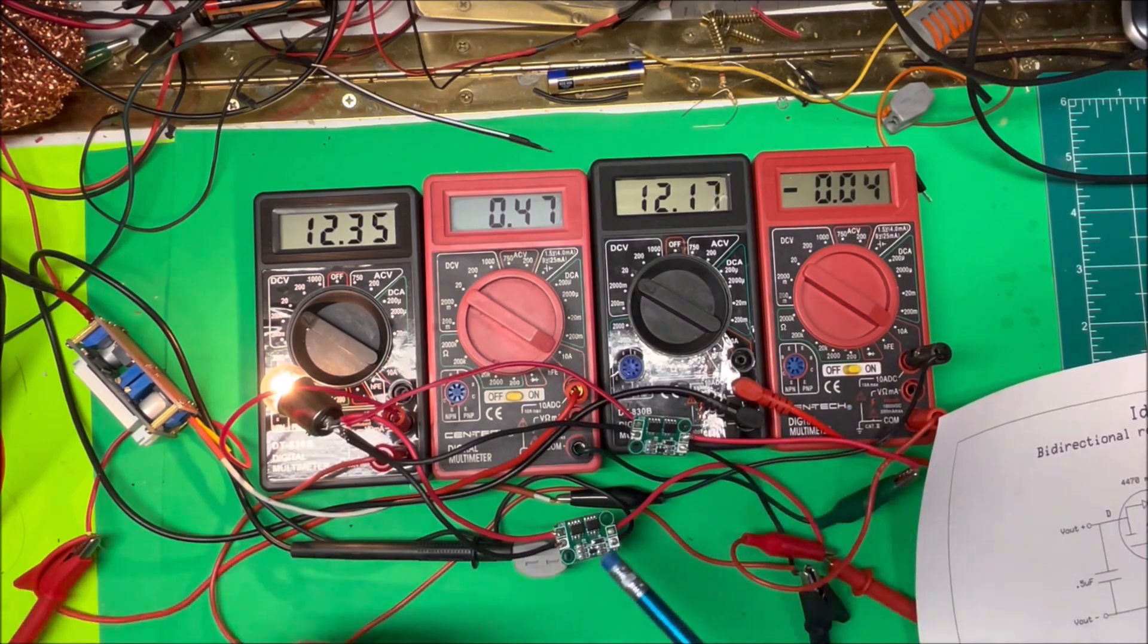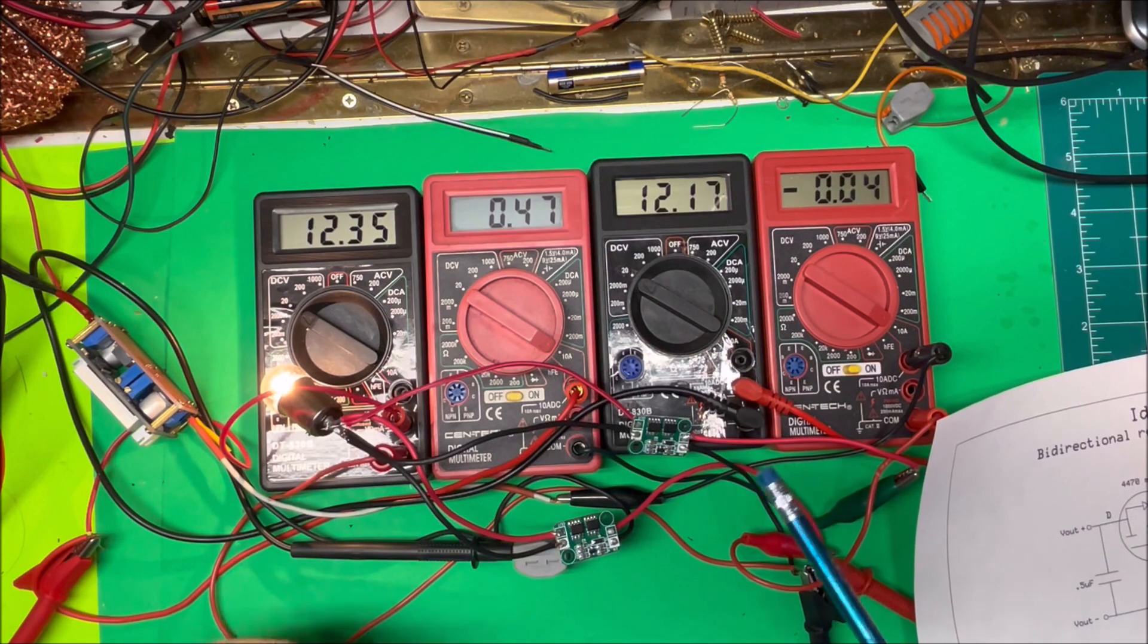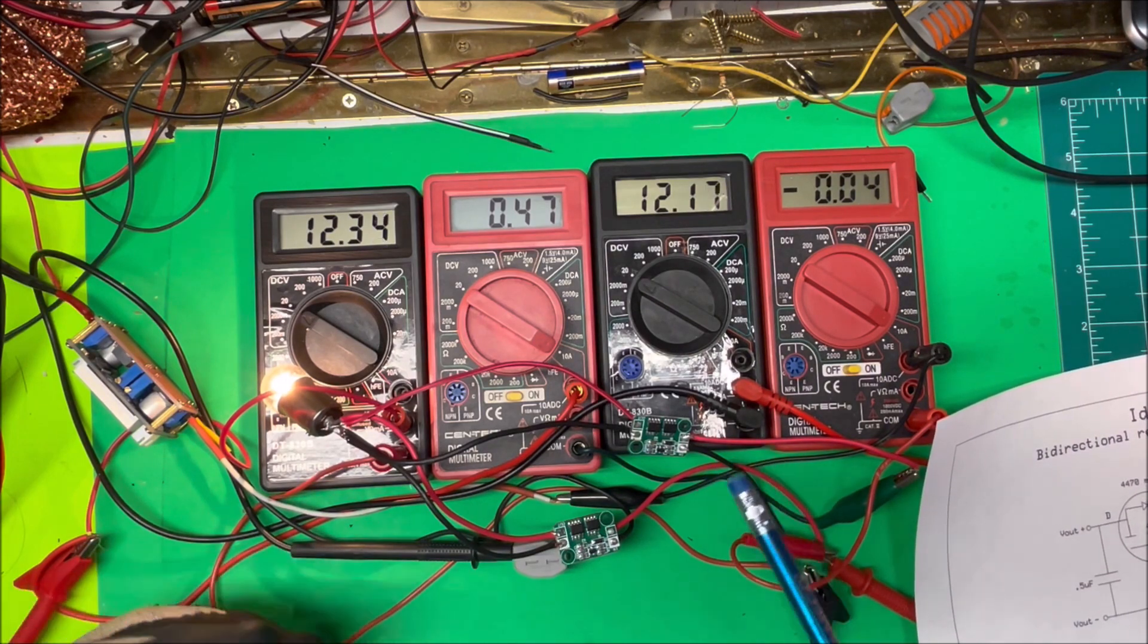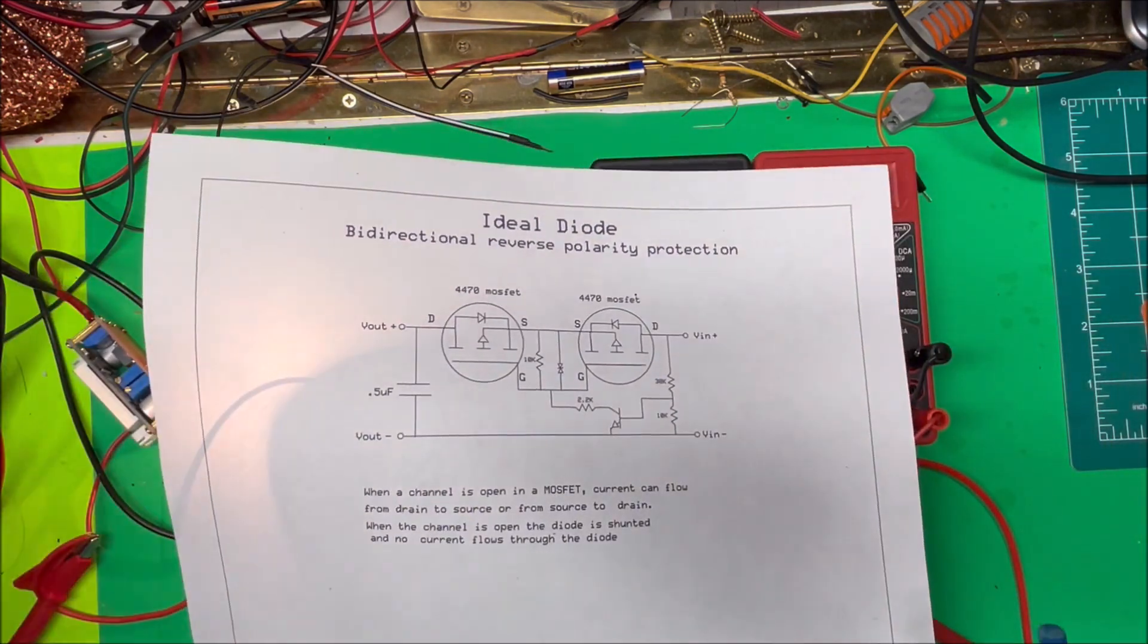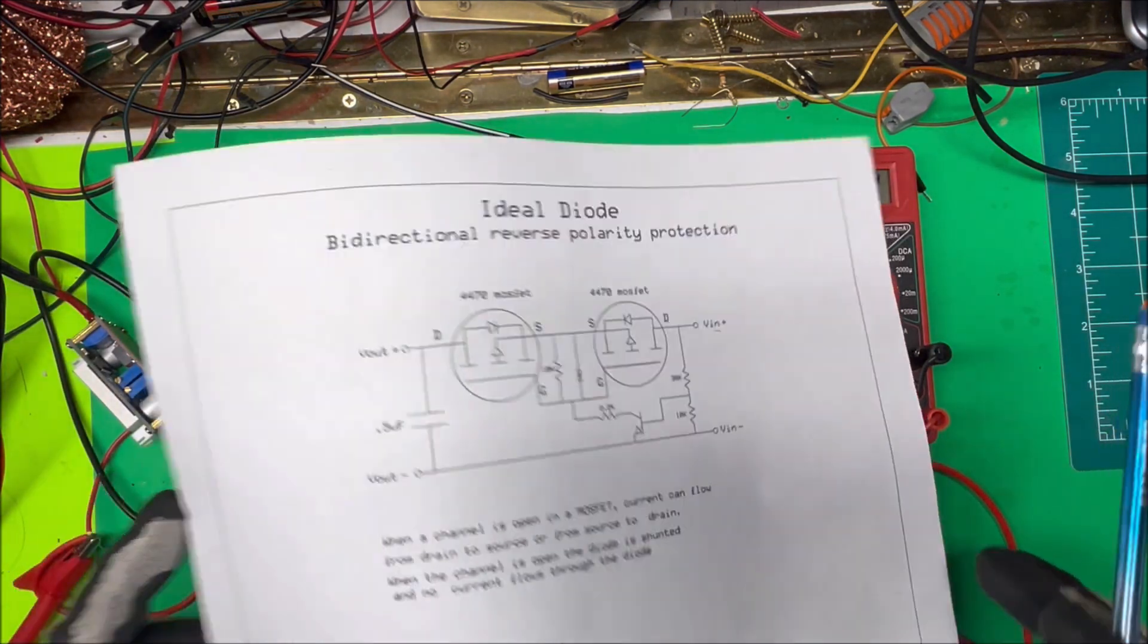So I'm getting voltage back through this diode here which I don't want to do. That's going to put voltage back into the other set of batteries and that's not good. So why is that happening? Let's turn that off.